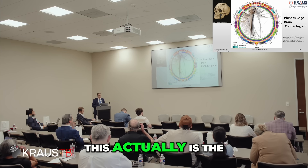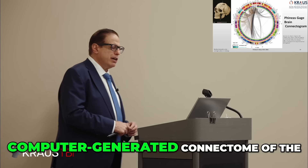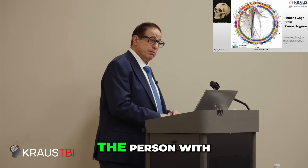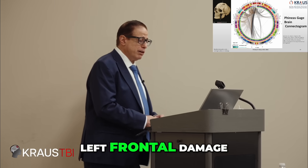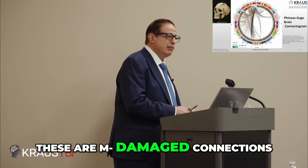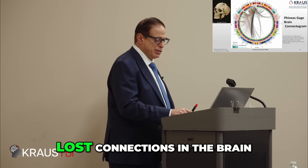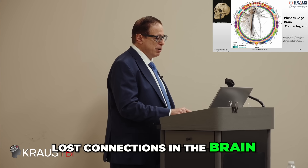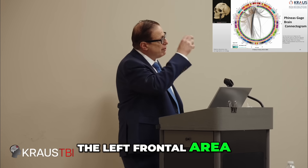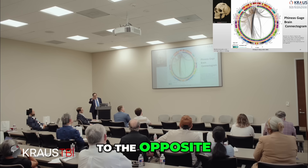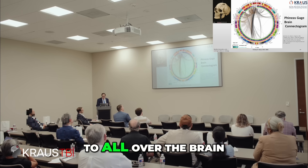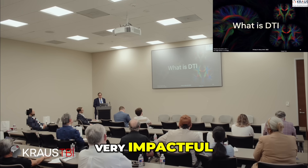This is a computer-generated connectome of the brain of Phineas Gage, the person with the left frontal damage. These aren't intact connections — these are damaged connections, lost connections in the brain. And we can see, even though the injury is in the left frontal area, how it reaches to the opposite side, to the posterior, to all over the brain. Very impactful.